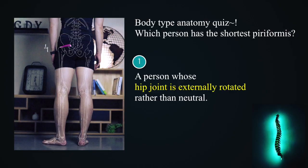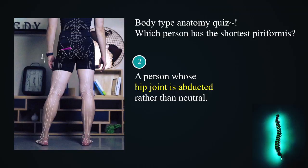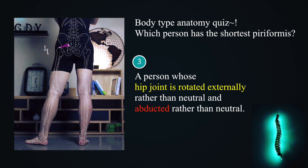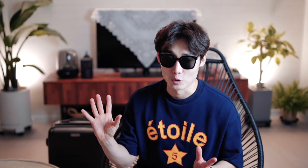This is the body type anatomy quiz. Which person has the shortest piriformis? A person whose hip joint is externally rotated rather than neutral, a person whose hip joint is abducted rather than neutral, or a person whose hip joint is both externally rotated and abducted rather than neutral? A person whose hip joint is externally rotated and at the same time has an abducted hip joint has a super short piriformis muscle.